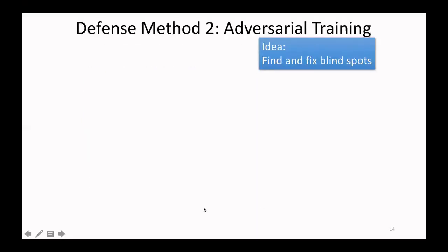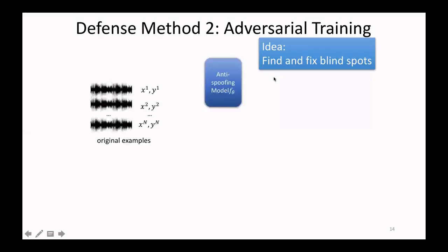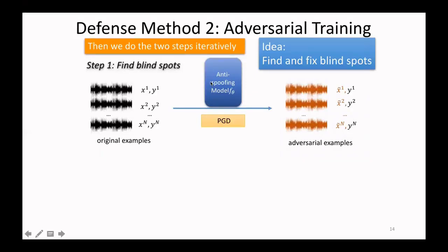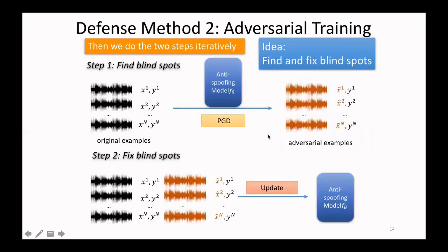The second defense method is adversarial training. The basic idea of adversarial training is to find and fix the blind spots of the anti-spoofing model. Given the training data, we first train the anti-spoofing model, then we do two steps iteratively. Step one: given the anti-spoofing model and the original data, we use PGD to generate adversarial examples. Step two: fix the blind spots — we use both the original examples and the adversarial examples to retrain the anti-spoofing model. Then we do step one and step two iteratively until convergence.